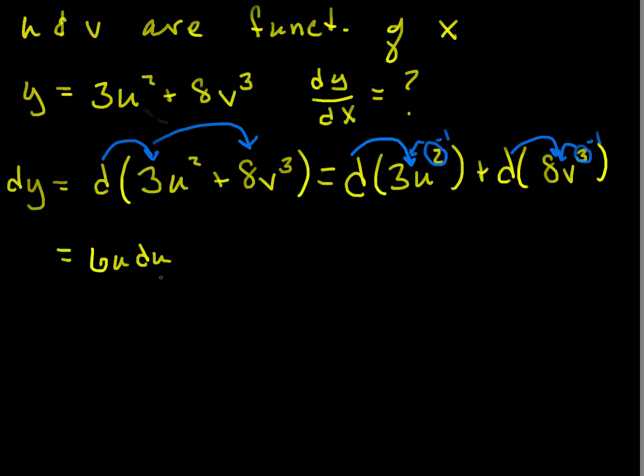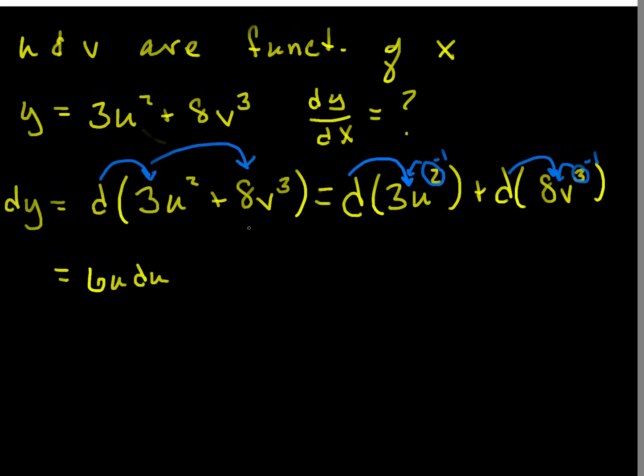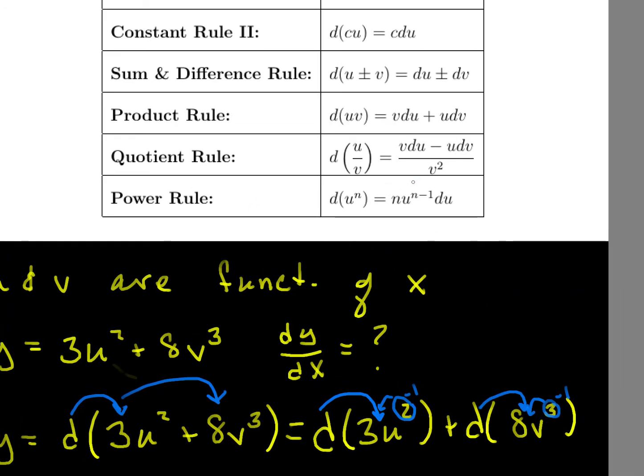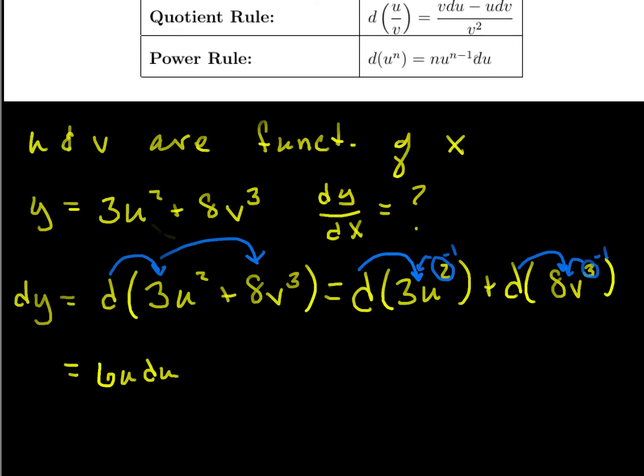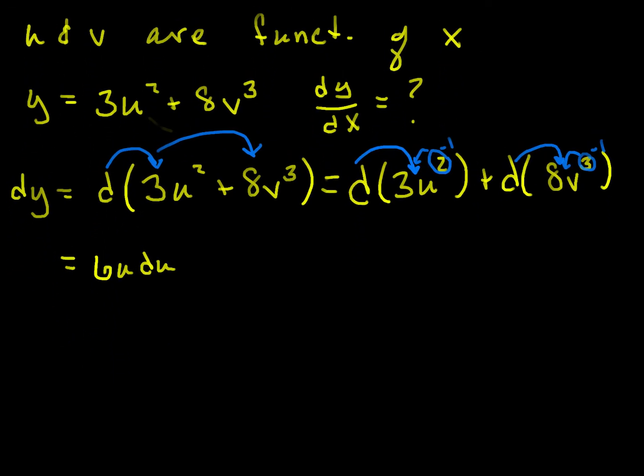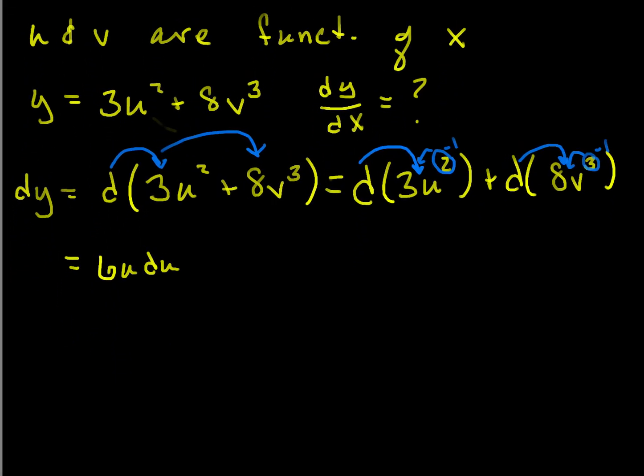we get that this is equal to 6u du. Don't forget our differential, because the power rule says that, yes, the exponent comes down, becomes a coefficient. That reduces by 1, but we still have to hold on to the du. And this is definitely one of those places that if you lose that du, you'll get very confused later on in trying to solve the problem. All right, so dy is equal to 6u du plus 24v squared dv.